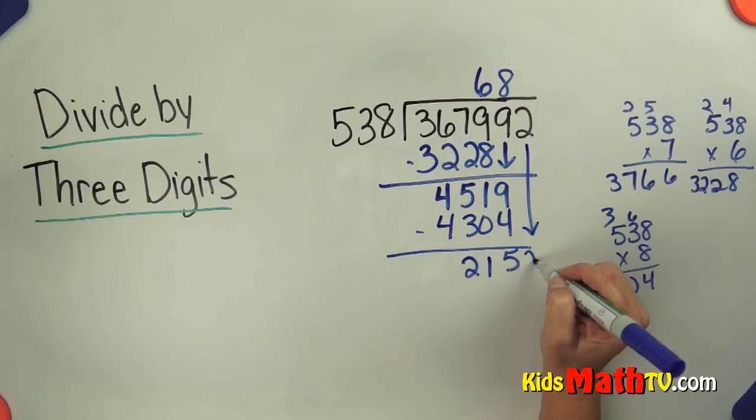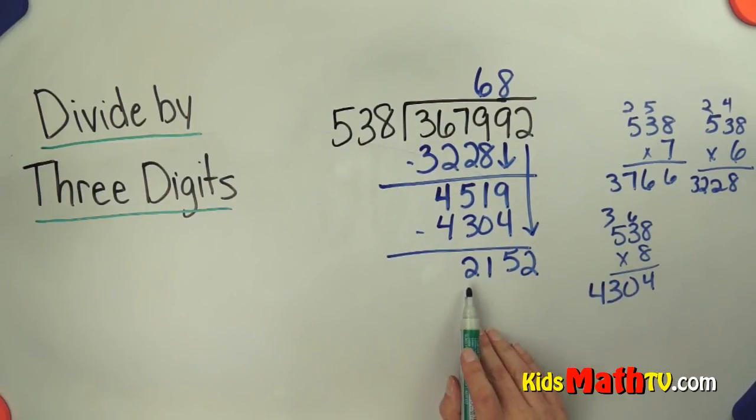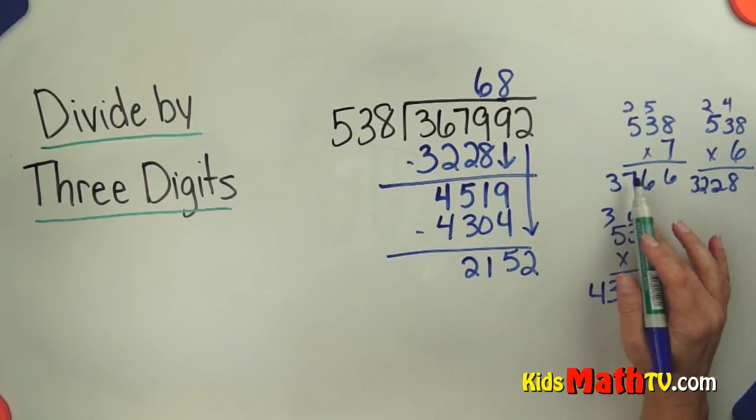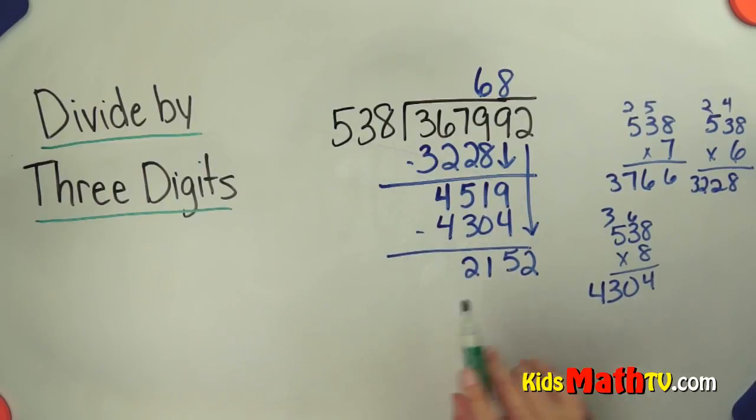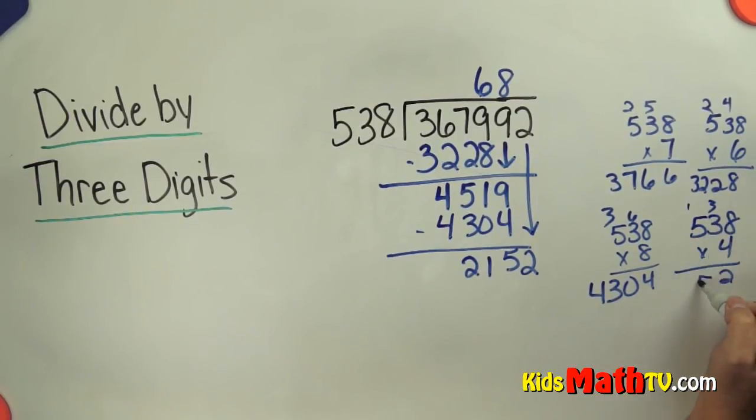I'm going to bring down a 2. 2,152 is smaller than any of these. I'm thinking maybe around 4. 538 times 4 is 32, 12, 13, 14, 15, 21. Aha! Exactly.